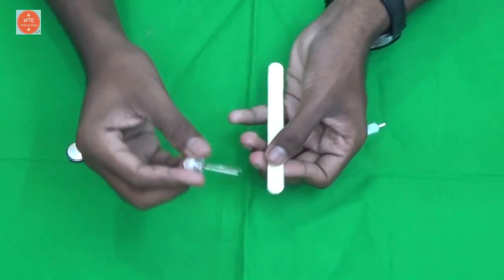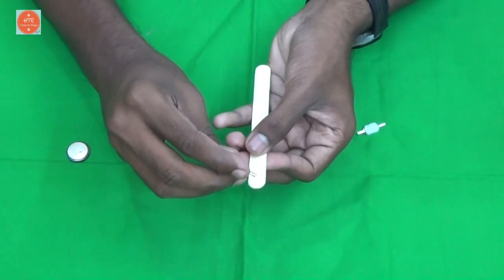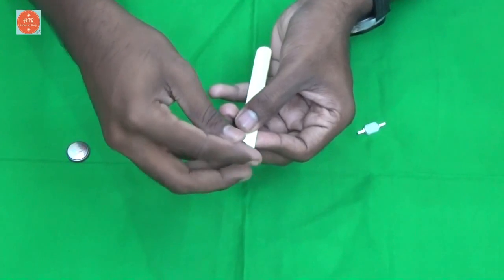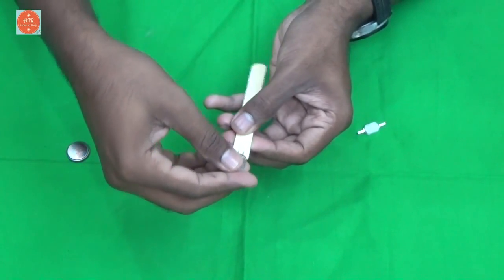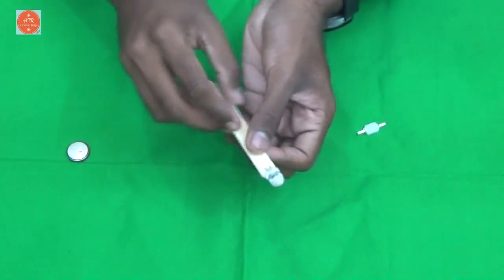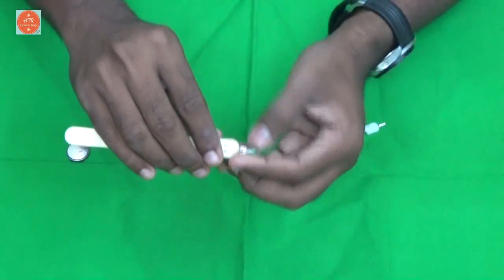Then take the LED and place it like this. Then bend the LED like this.